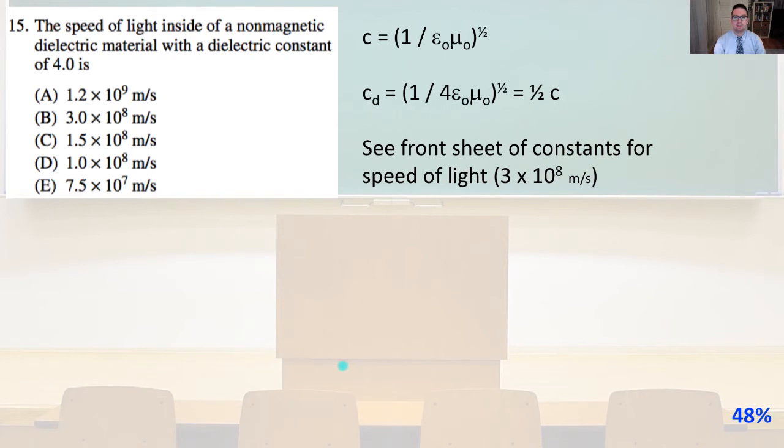And so we have our speed of light in the dielectric material. That is going to be 1 over the square root of 4 times epsilon naught mu naught. Take the square root of 1 over 4, basically. That equals 1 over 2 times the original speed of light. We know that the original speed of light, we're going to see our front page again for constants, where it's 3 times 10 to the 8 meters per second. So one half of that is simply answer C.